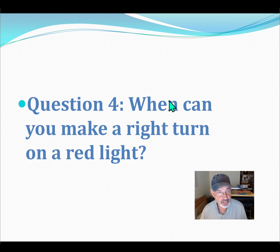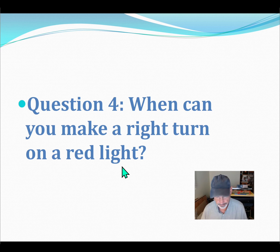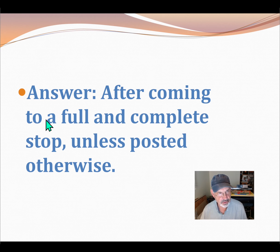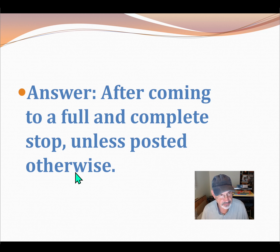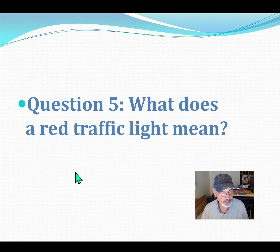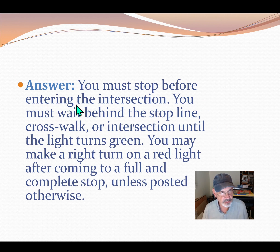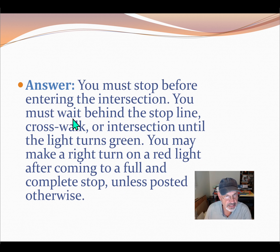Question 4: When can you make a right turn on a red light? Answer: After coming to a full and complete stop, unless posted otherwise. If it's a left turn, the answer is completely different — we're just talking about the right turn. Question 5: What does a red traffic light mean? You must stop before entering the intersection — you must stop and wait behind the stop line until the light turns green.